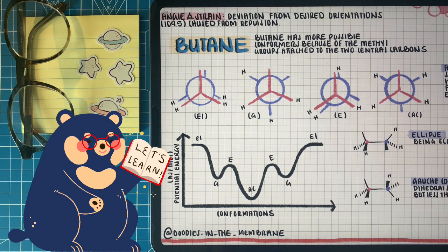Gauche is just that they're like 60 degrees apart. Then we form another eclipsed conformation. But in this case, we're eclipsing hydrogens with a methyl group. So it's not as high of an energy than the E1 state, but it's still an eclipsing state, so we have an increase of energy.